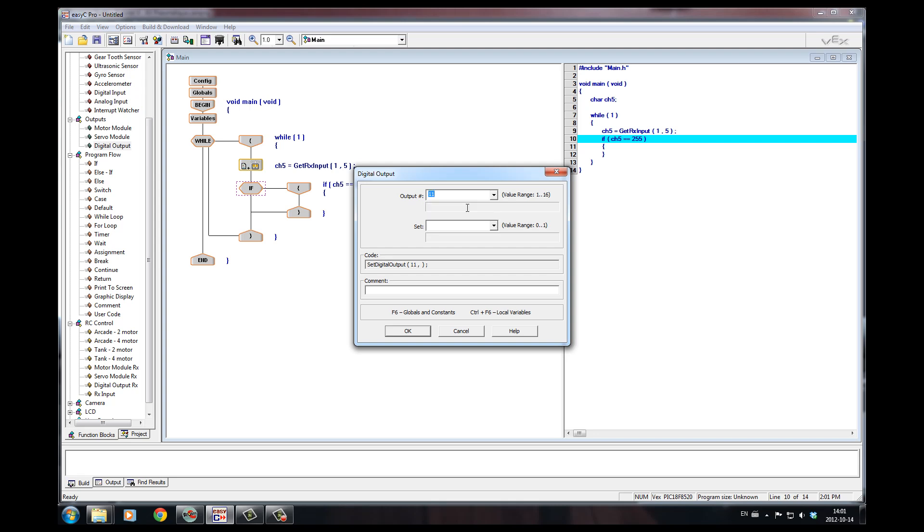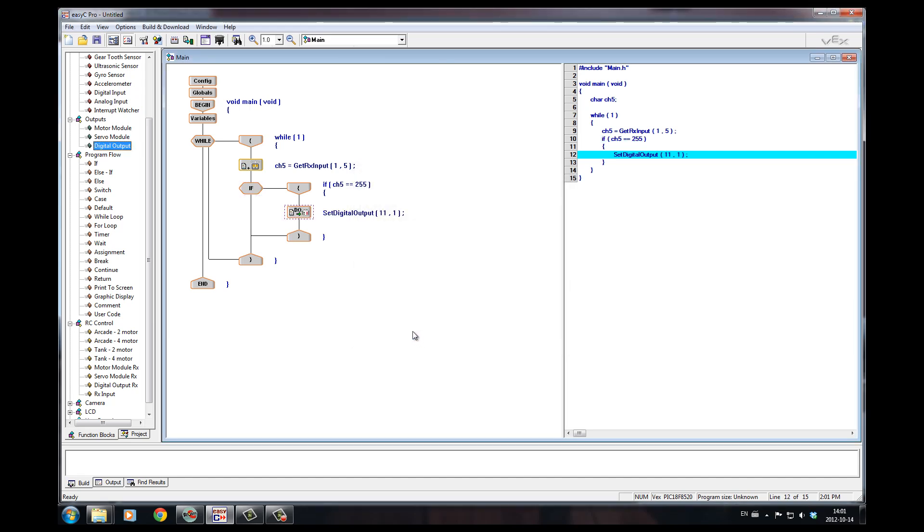The cylinder connected to number 11, I'm going to set that value to 1. So that means that if I press button assigned to 255, the cylinder will deploy. Now, in this example, it could be a single action or double action piston.